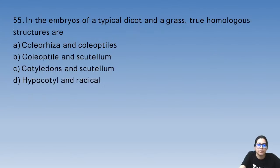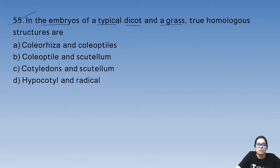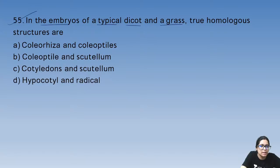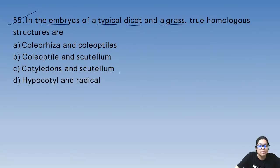Question 55: in the embryos of a typical dicot and a grass, what are the true homologous structures? Homologous structures have the same origin but different functions. These are the cotyledon in dicot and the scutellum in grass (monocot).